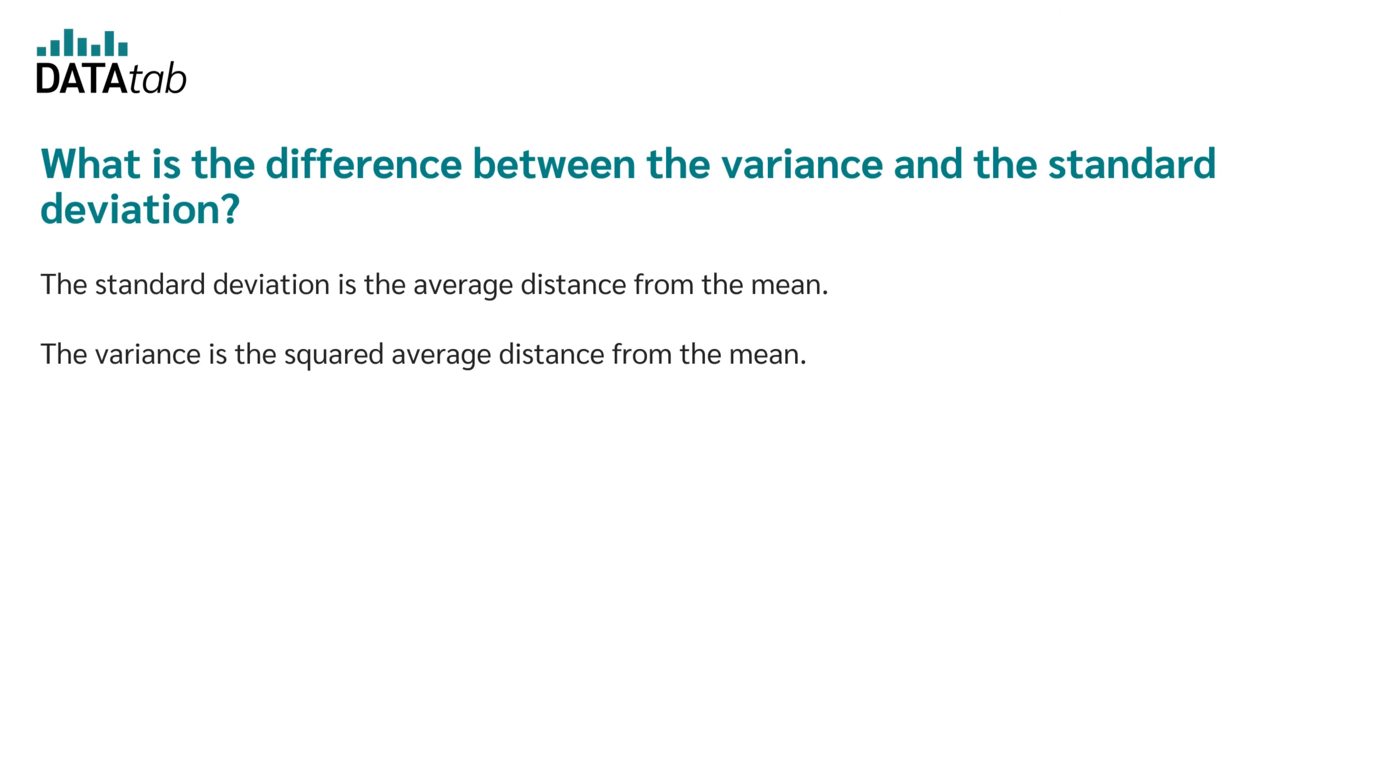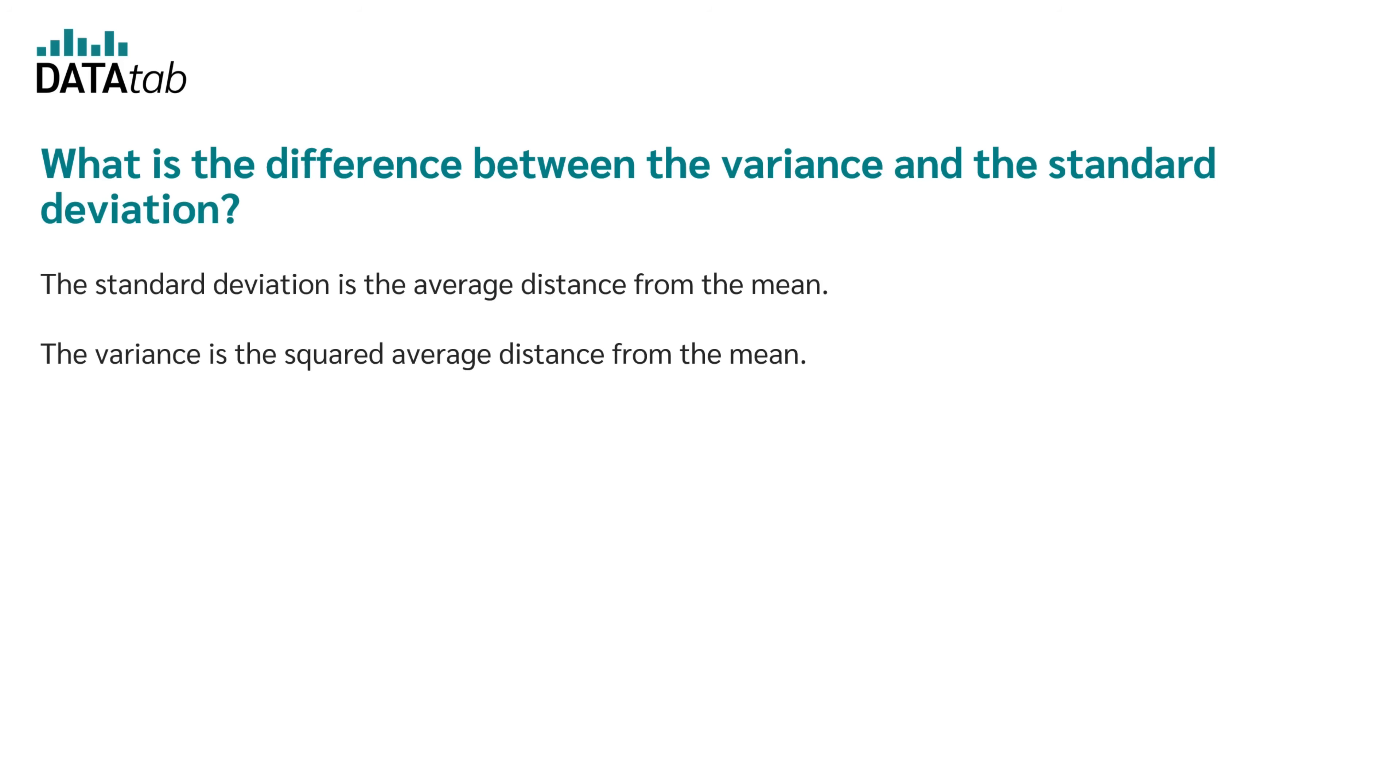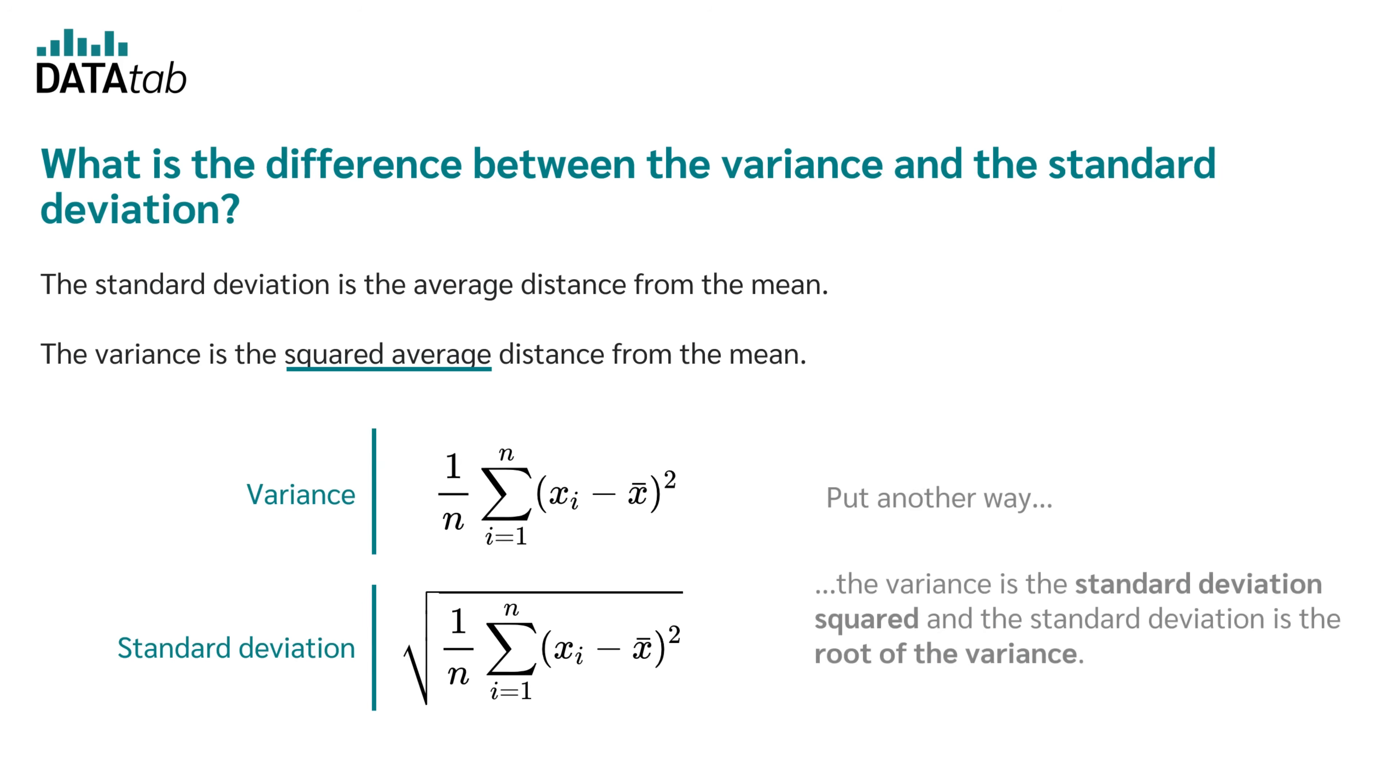Let's look at the next question now. What is the difference between the standard deviation and the variance? As you now know, the standard deviation is the average distance from the mean. The variance now is the squared average distance from the mean. So we have one and the same formula. The only difference is that in order to calculate the standard deviation, we take the root. In order to calculate the variance, we don't do that. To put it the other way around, the variance is the squared standard deviation and the standard deviation is the root of the variance.